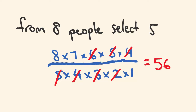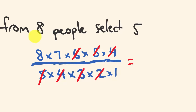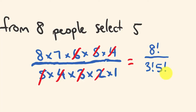Just before I go, using the factorial rule that would be written as: eight factorial, divided by (n minus r) — which is eight take away five — so three factorial, all divided by five factorial. It's pretty simple. Hopefully that video is of great help to you — see you next time!